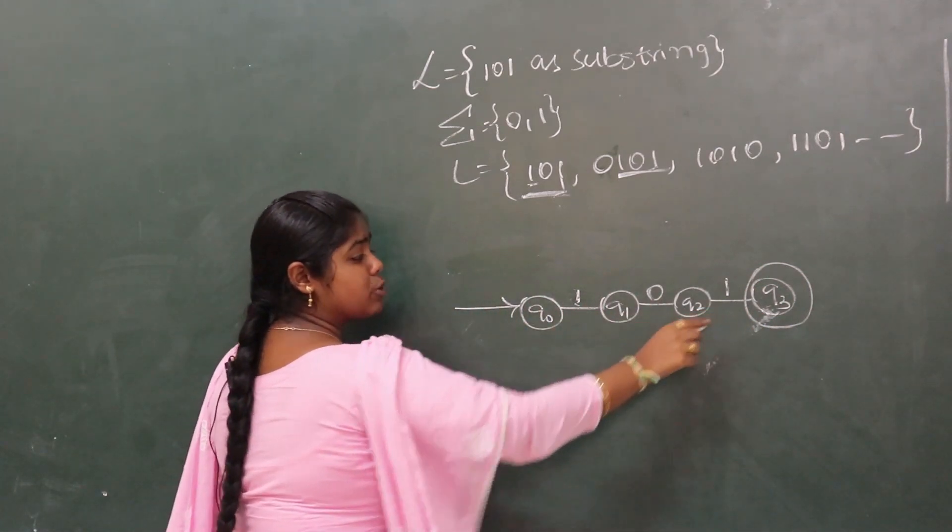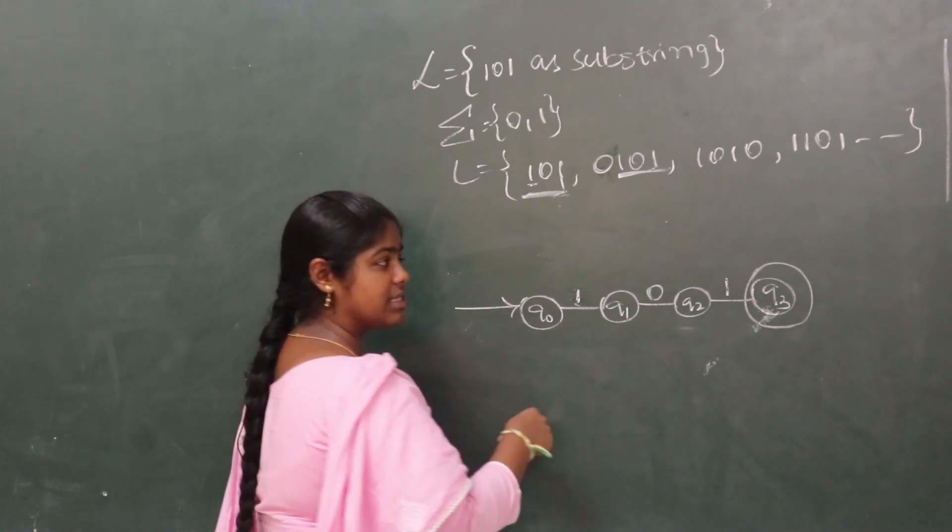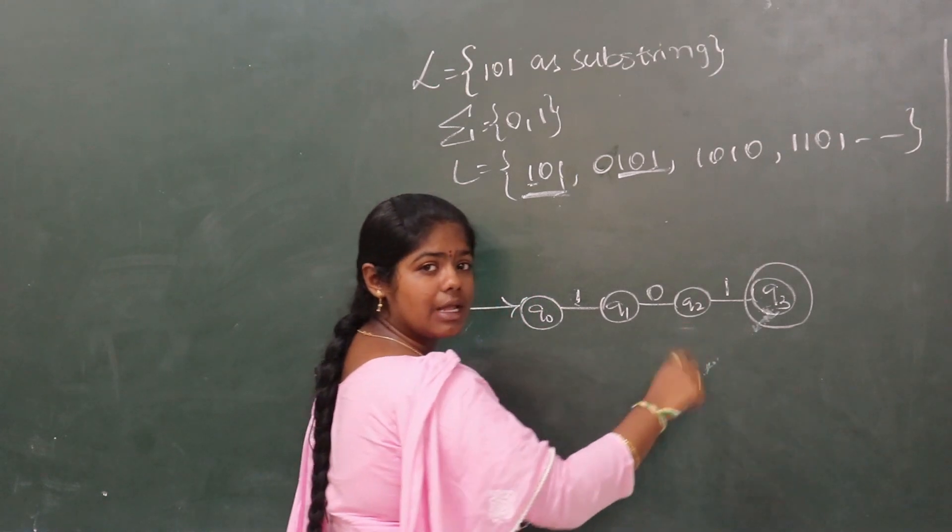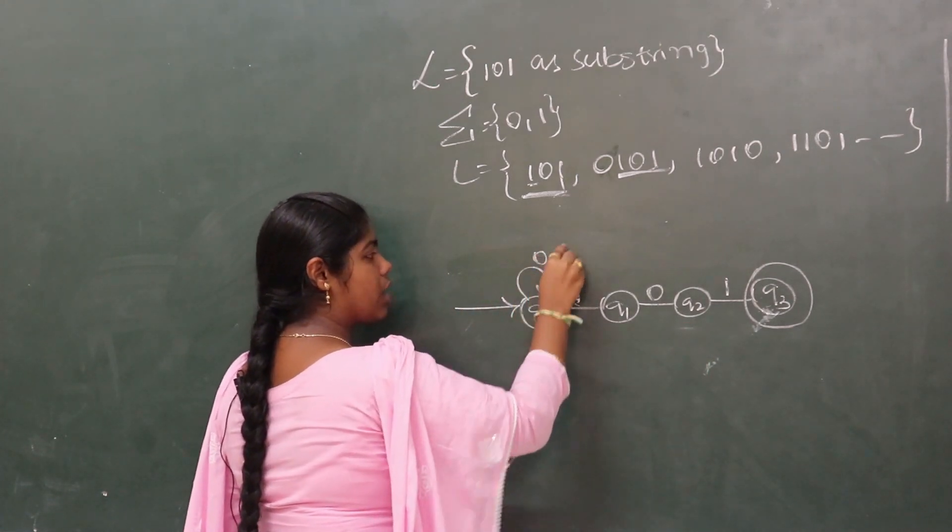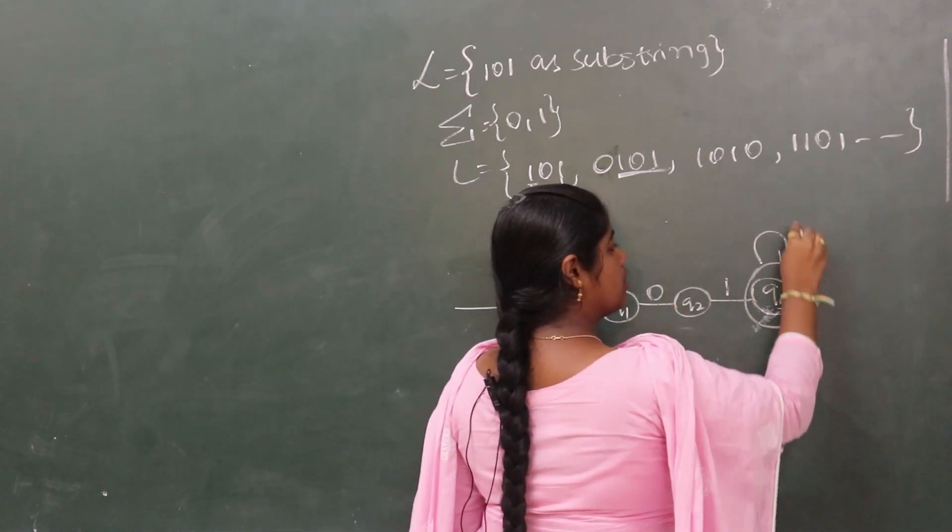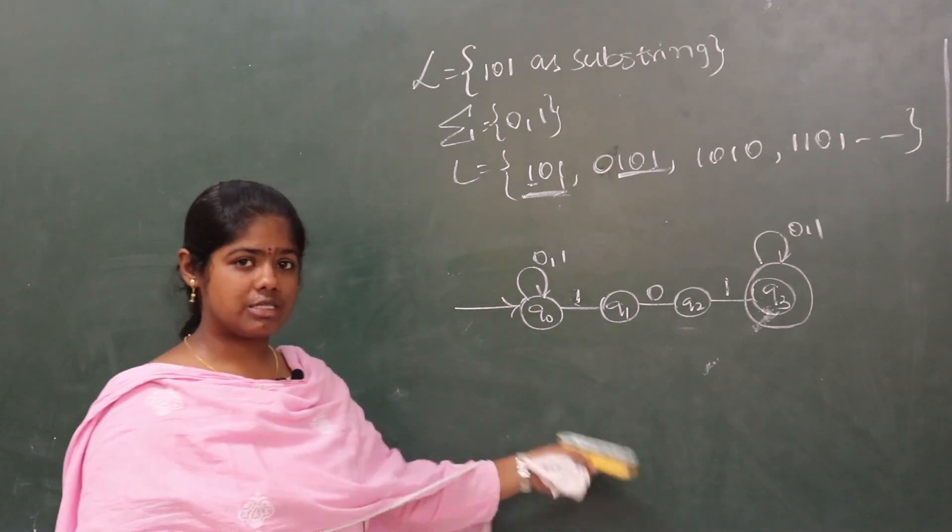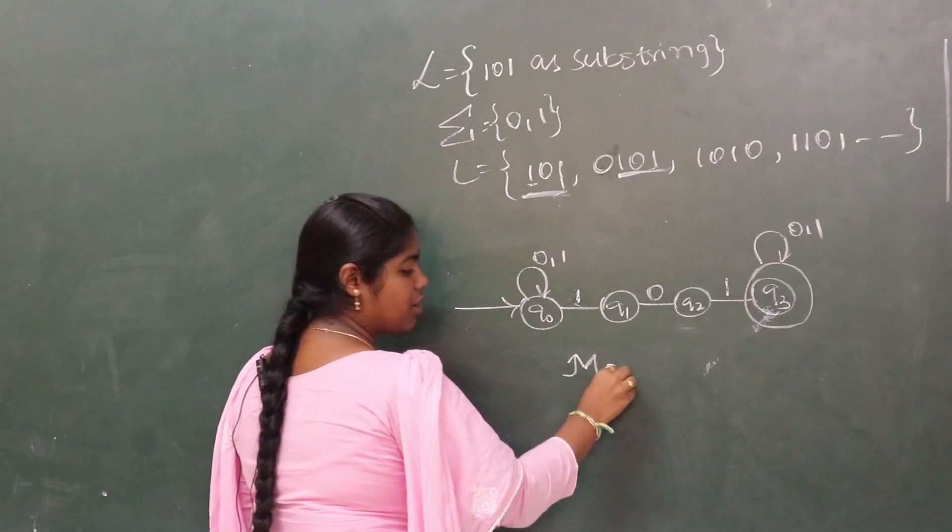After accepting 101 as a substring, before it any number of 0s or 1s can come. Similarly, after the substring reaches the final state, any number of 0s or 1s can come. Therefore, add a self loop over 0,1. Self loop over 0,1 in first and last states completes this non-deterministic finite automata.